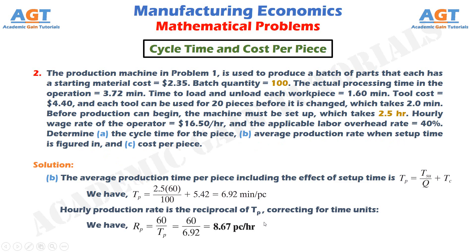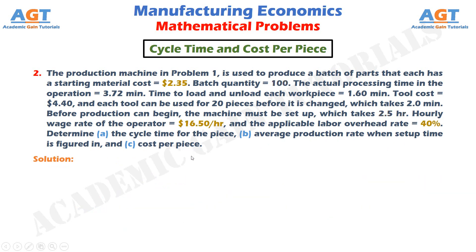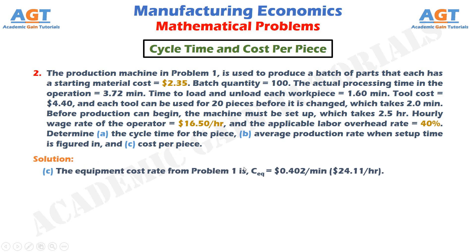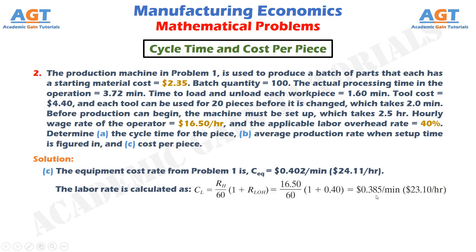Now for part (c), we determine the cost per piece. From Problem 1, the equipment cost rate is 0.402 dollars per minute, or 24.11 dollars per hour. The labor rate is calculated as: C_L = r_h / 60 × (1 + R_LOH) = 0.385 dollars per minute, or 23.10 dollars per hour. The cost of tooling: C_t = $4.40 / 20 pieces = 0.22 dollars per piece.